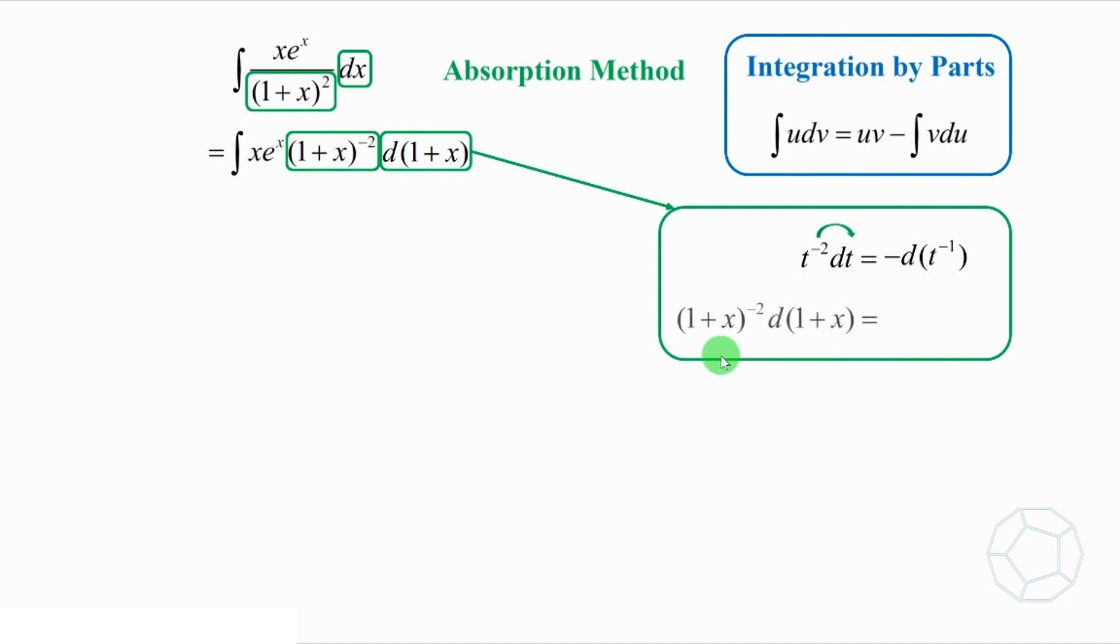Likewise, 1 plus x to the power of negative 2 d bracket 1 plus x is equal to negative d bracket 1 plus x to the power of negative 1. We put this result into the integral like this. This is a special trick to handle product or quotient of several terms.